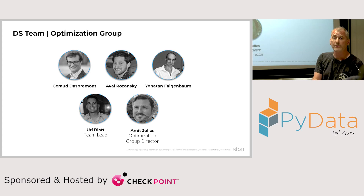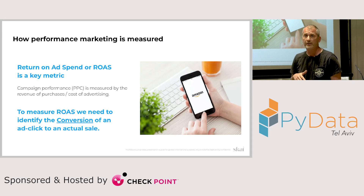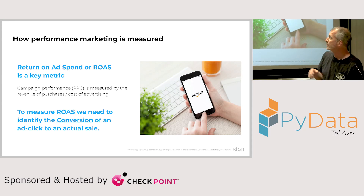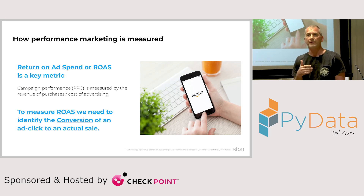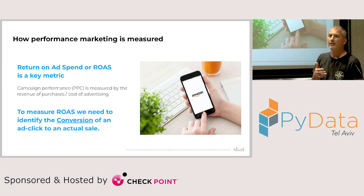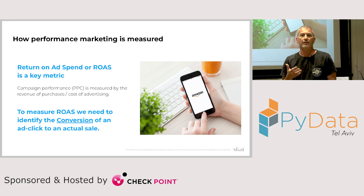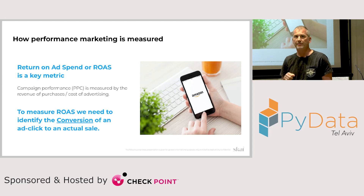All our products are in production, they meet a lot of clients, and a lot of money passes through our tools. To give a little background on performance marketing and how we measure campaign efficiency in the pay-per-click setting: an advertiser pays for the clicks on his ad — he pays the publisher. In our scenario, we're talking about Amazon as the publisher. The cost is counted based on the clicks.